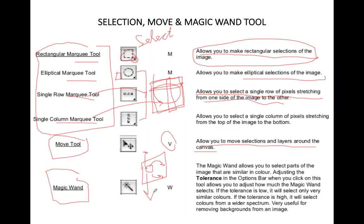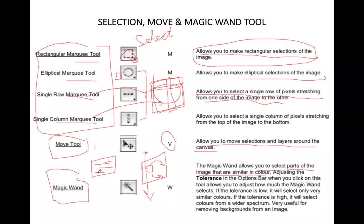The magic wand tool allows you to select parts of the image that are similar in color. For example, if your image has multiple colors, clicking a color with the magic wand tool will automatically select all areas of that color in the image. The shortcut key for the magic wand tool is W. This is the importance of the magic wand tool.